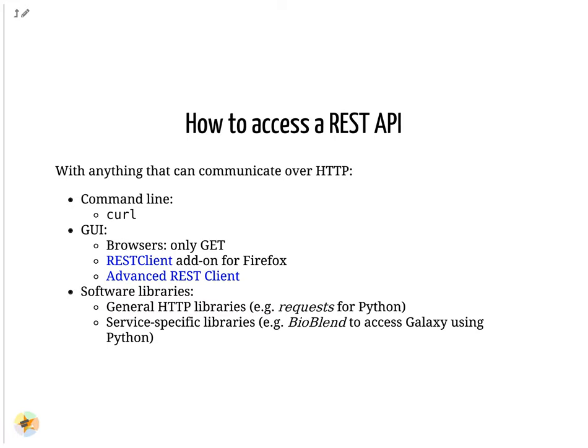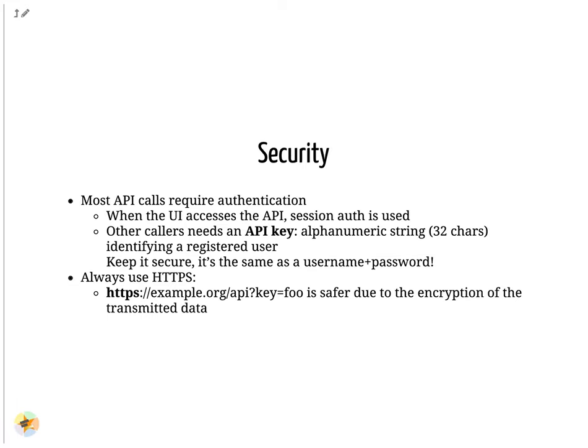A note about security. When programmatically performing requests that require authentication, the client needs to pass an API key. An API key is an alphanumeric string uniquely identifying a user on a server. Since it is equivalent to the combination of your username and password, keep it secure. In particular, always use the HTTPS protocol to make requests, not HTTP which sends data unencrypted.